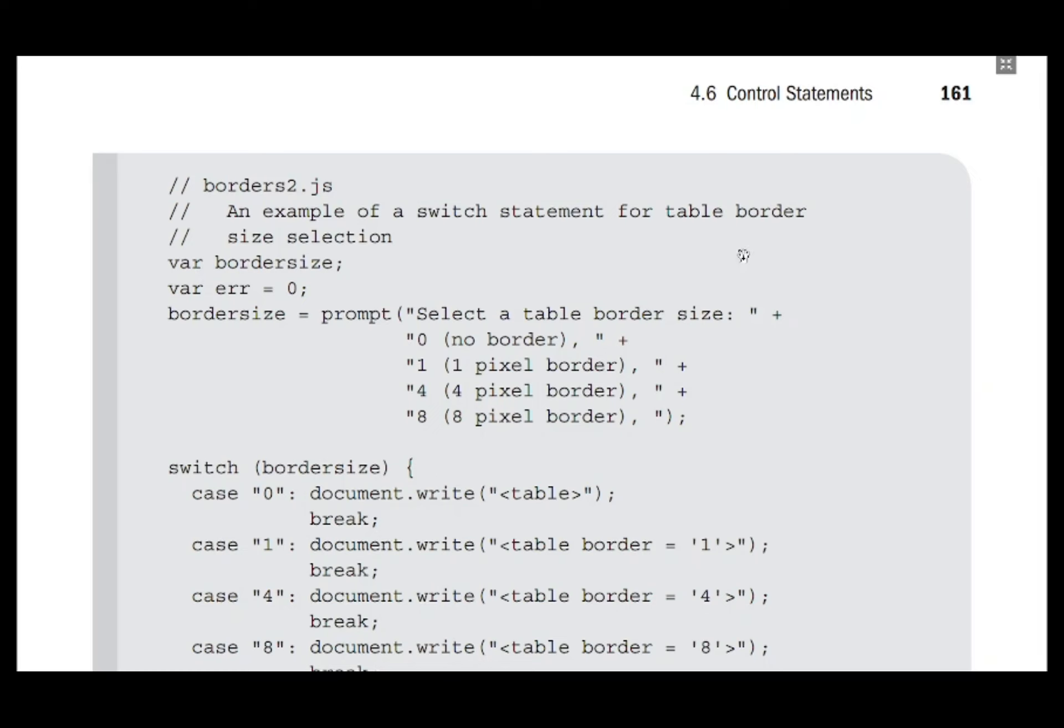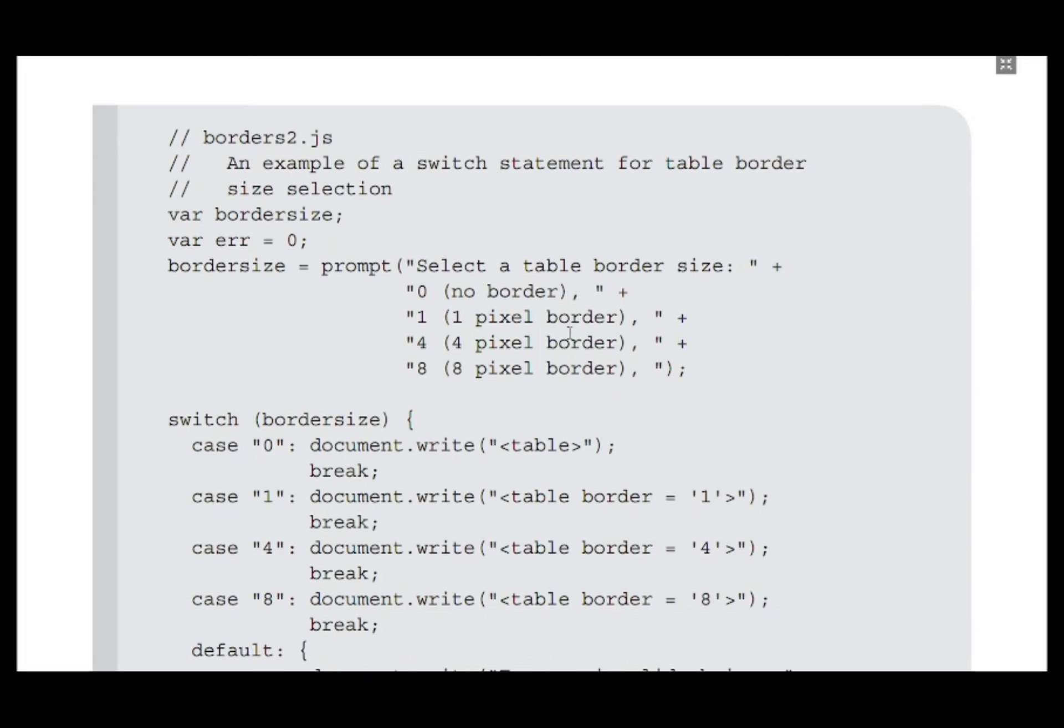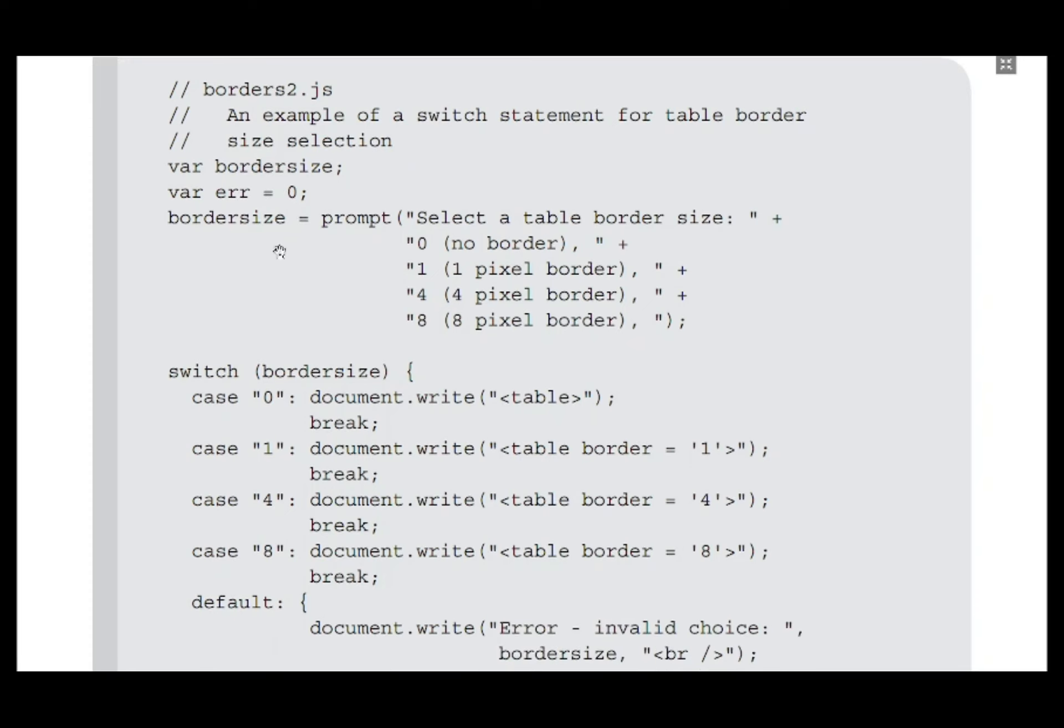Now let's see an example switch-case statement given in your textbook. Only the JavaScript part is shown here, so there are two variables defined: border size and err, both in global scope, and err is initialized to zero.